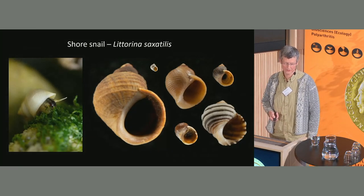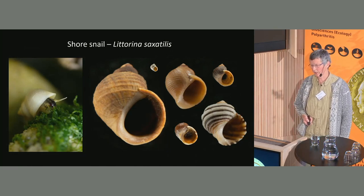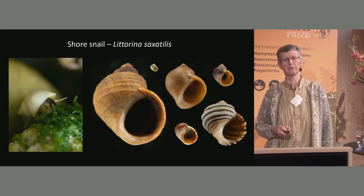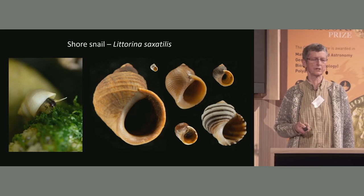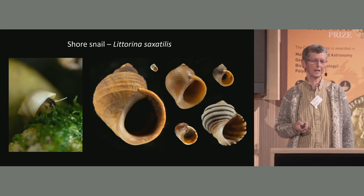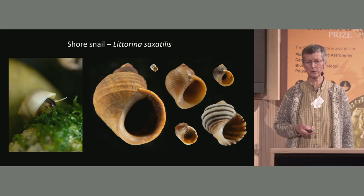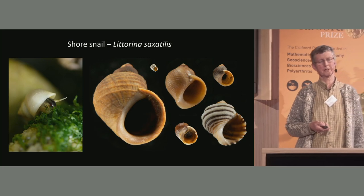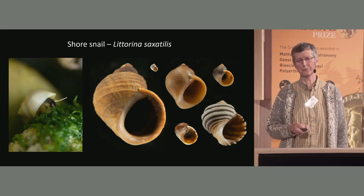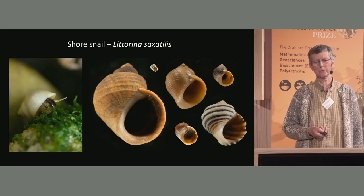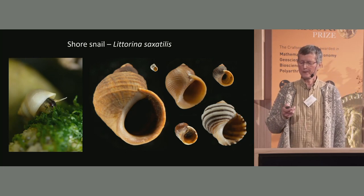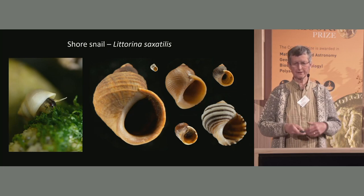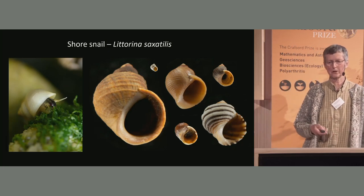If we now switch to the snail system, you can be struck at once when you see this species, Littorina saxatilis, that it's enormously polymorphic in phenotype. These are all adult individuals — you can see the size range and many other features that are quite variable. But you can still, in principle, cross all of them and get fertile offspring, at least in the lab and some places in nature. But the story is more complex than just a very big homogeneous gene pool.